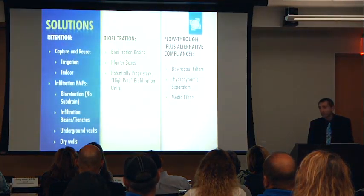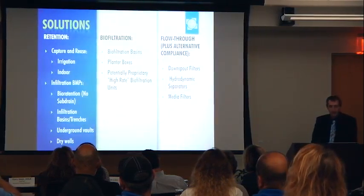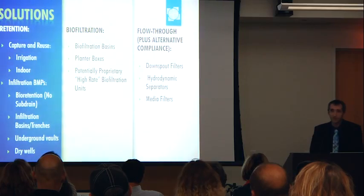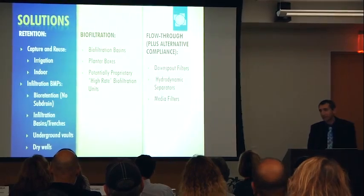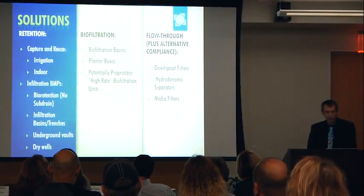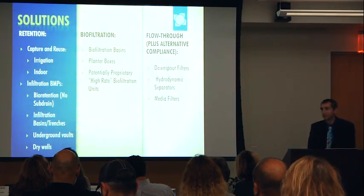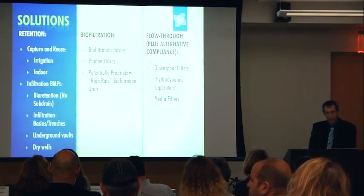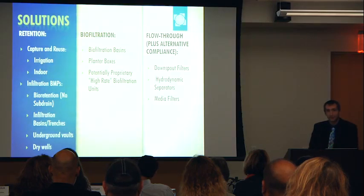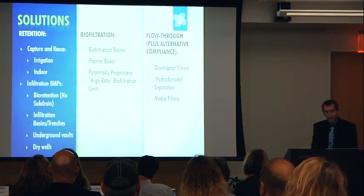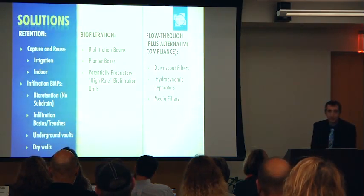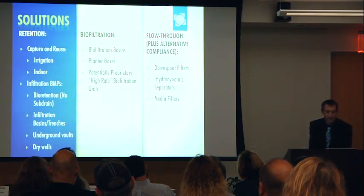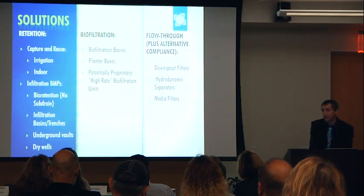Now some solutions and types of BMPs you might see on projects. Under the retention category there are basically two options: capture and reuse, or infiltration. Capture and reuse can be through irrigation or indoor use such as toilet flushing. Infiltration BMPs can take several forms: bioretention basins without a subdrain — where the water infiltrates directly — as well as infiltration basins, infiltration trenches, underground vaults designed with an open bottom to allow infiltration, and dry wells for sites with a relatively small footprint.